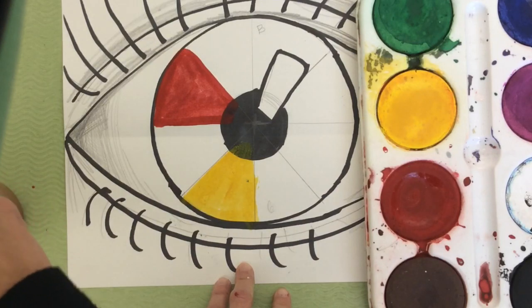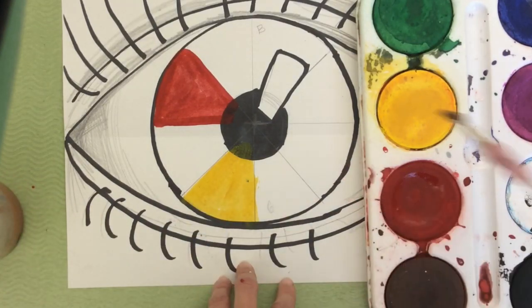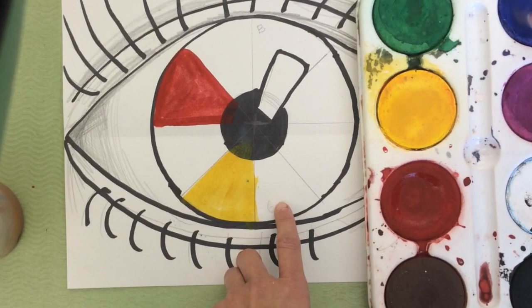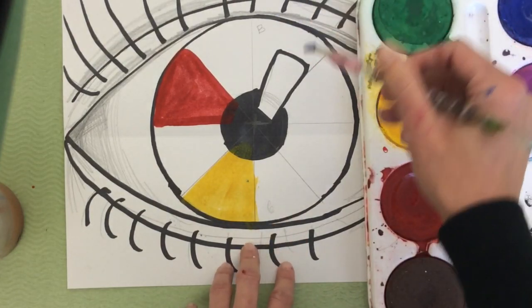Once I'm finished painting the yellow, I'm going to wash out my paintbrush again, and then I have one, two, three, four, five other spots. I'm going to actually skip two spots, and then I'm going to use blue, which is the third primary color.